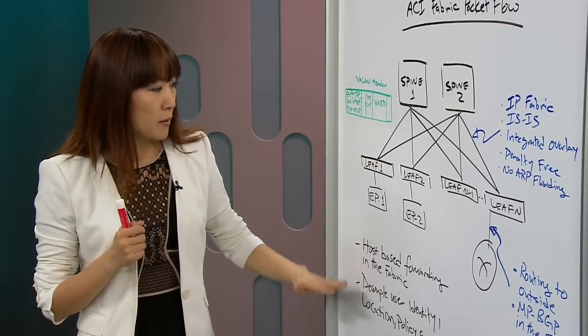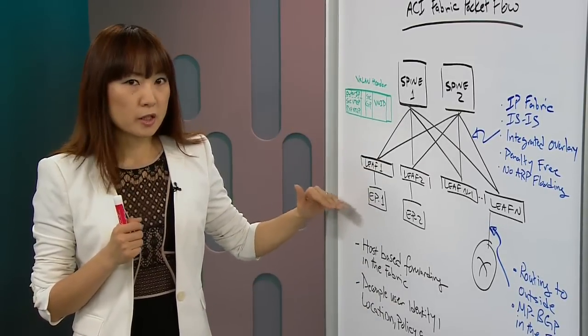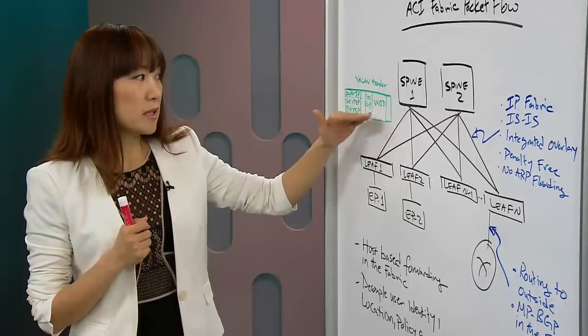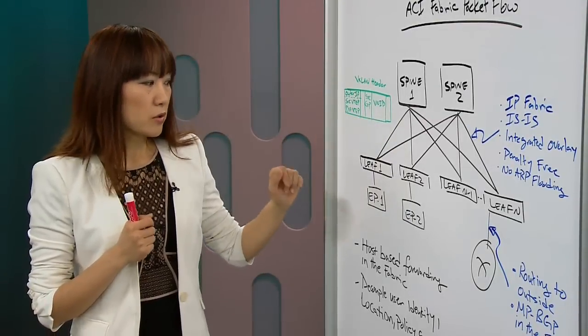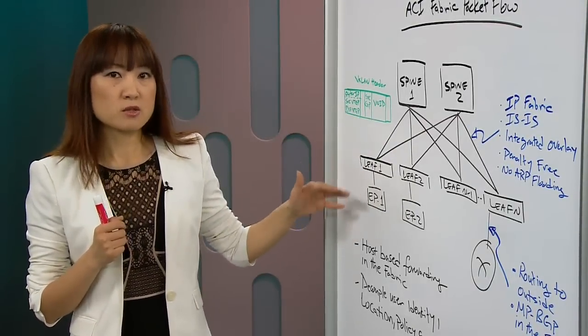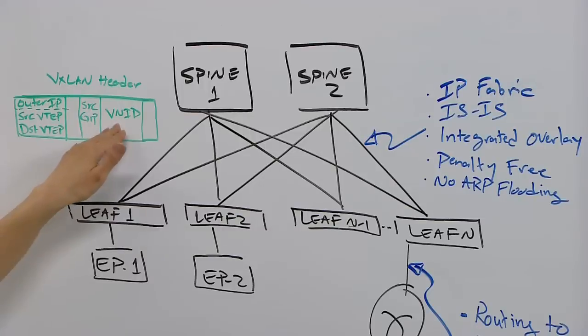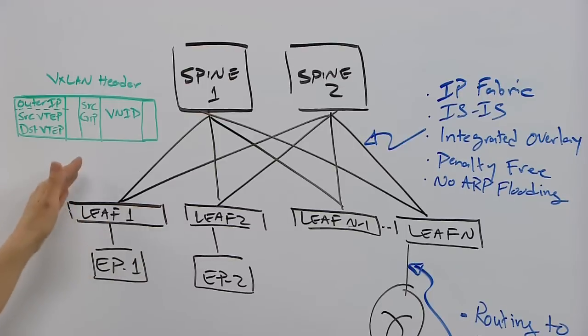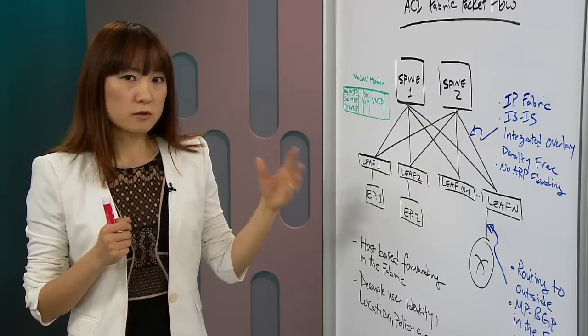And we also map on the leaf layer, we map the user network context into the VNID, VXLAN VNID. If the packets need to be switched, then the VNID can reflect bridge domain. If the packets need to be routed, VNID can be VRF. If the packets need to be redirected for service chaining, then VNID can be EPG for the service graph.